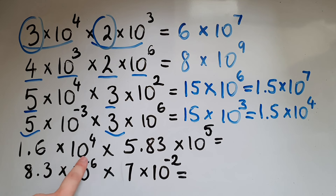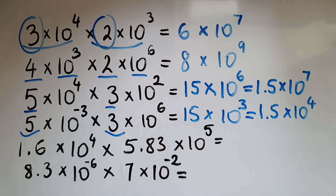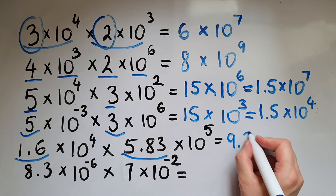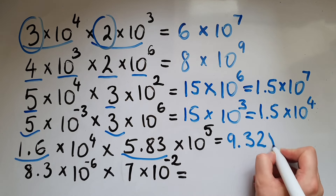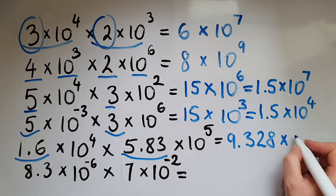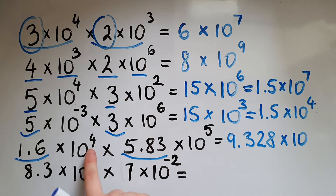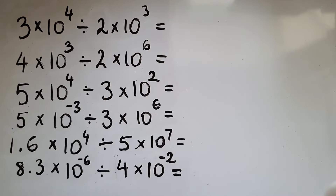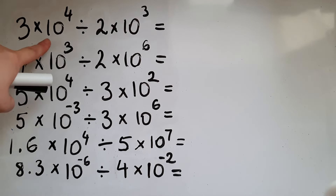1.6 times 10 to the power of 4 times 5.83 times 10 to the power of 5. First of all, 1.6 times 5.83 which is 9.328 — that is less than 10, so we don't need to change that — times 10 to the power of 4 and 5 is 9.